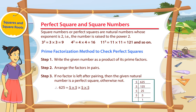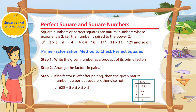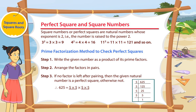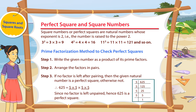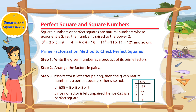To find whether 625 is a perfect square or not, break it down as a product of its prime factors. Therefore, 625 equals 5 into 5 into 5 into 5. Since no factor is left unpaired, hence 625 is a perfect square.